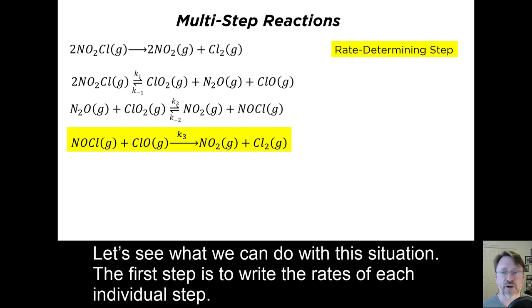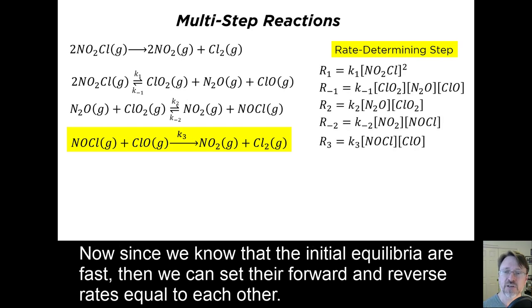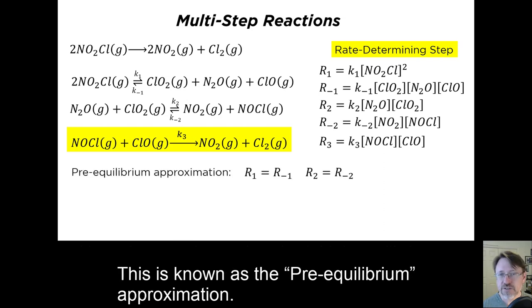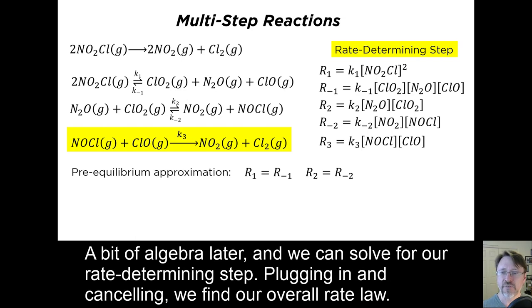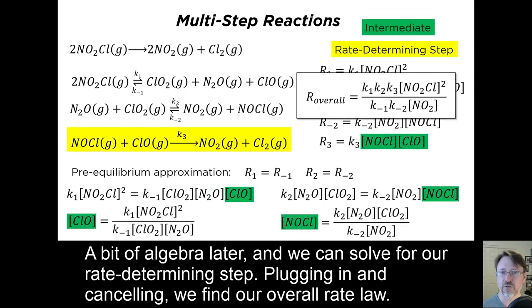The first step is to write the rates of each individual step. In this case, there are five of them. Now, since we know that the initial equilibria are fast, then we can set their forward and reverse rates as equal to each other. This is known as the pre-equilibrium approximation. A little bit of algebra later, and we can solve for our rate-determining step. Plugging in and canceling, we find the overall rate law.